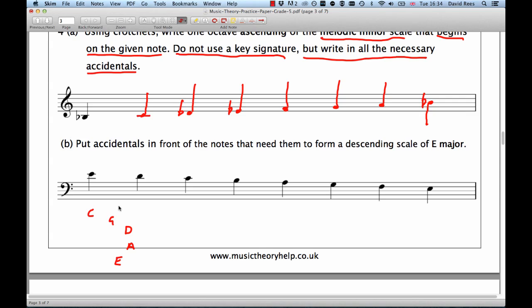G major is a scale with one sharp. D major is a scale with two sharps. A major is a scale with three sharps. And E major is the scale with four sharps. And so, we're going to need to use four sharps here in this scale.